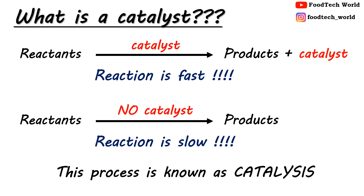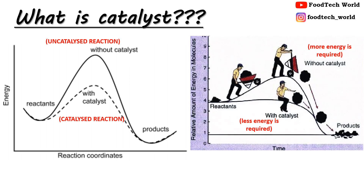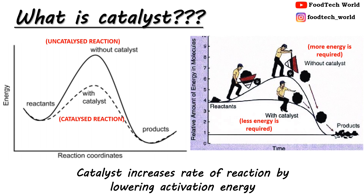As we discussed, enzymes are protein molecules that act as a biocatalyst, and enzymes are capable of catalyzing chemical reactions in the living cells at a high rate. Enzymes basically speed up chemical reactions by lowering the activation energy — they reduce the activation energy needed for that chemical reaction. So this is how enzymes function.